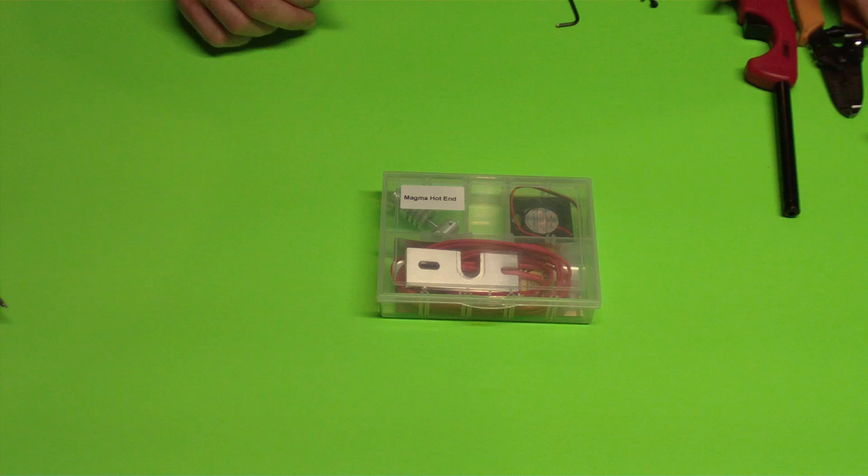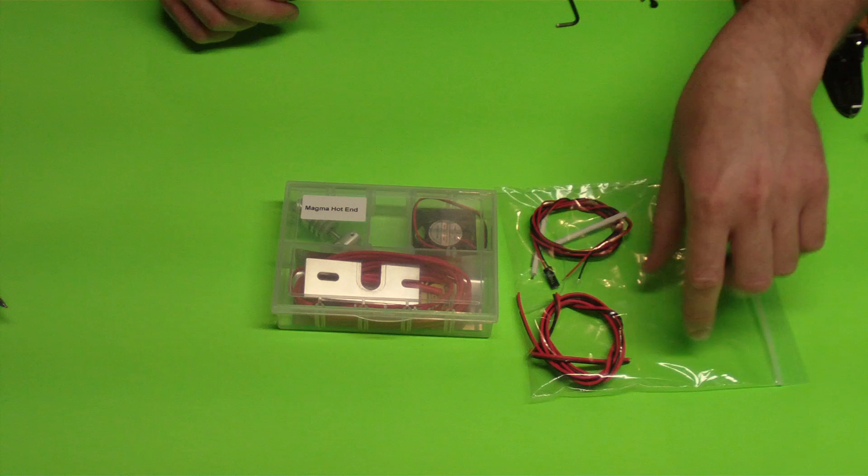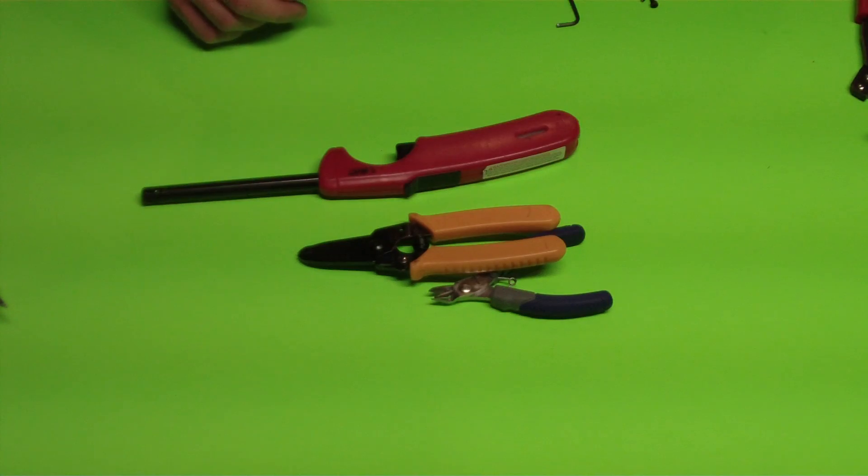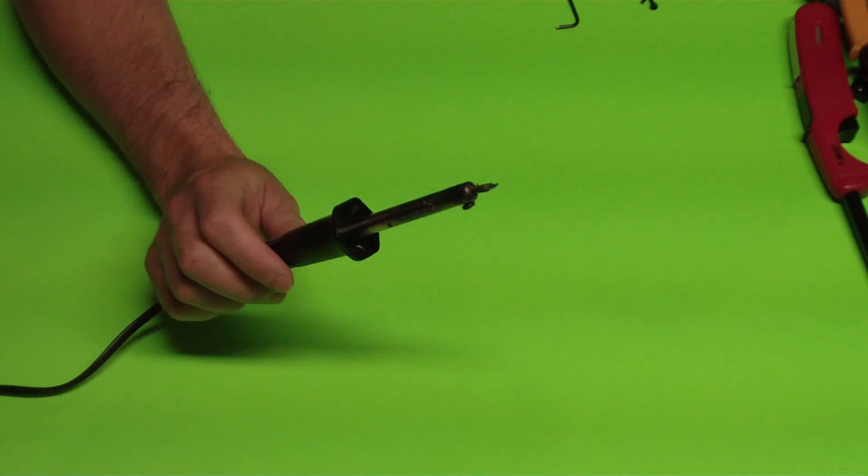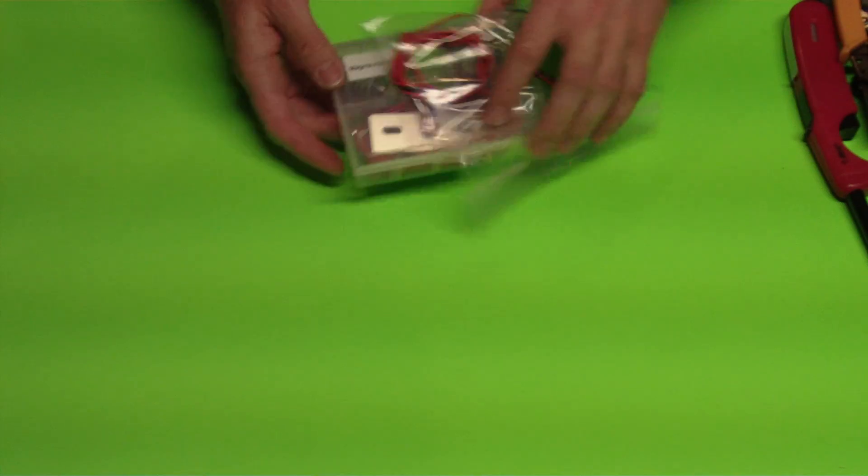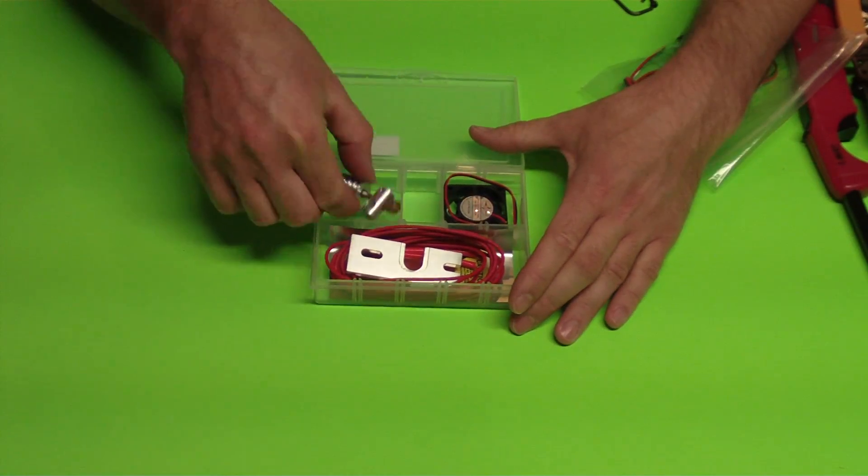First thing you're going to want to do is grab your Magma hotend. It's going to come with a little accessories bag that has some wires and things like that in there. You're also going to get some hand tools, and I'm going to solder items onto this. It just makes it a whole lot easier and quicker to assemble the hotend this way.